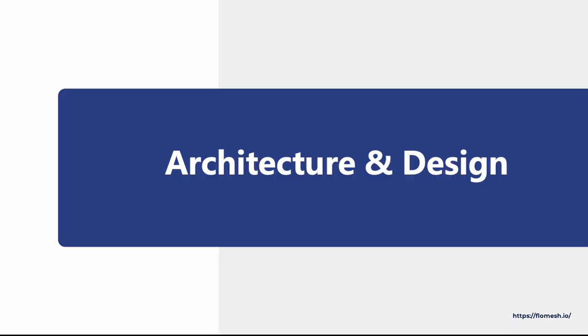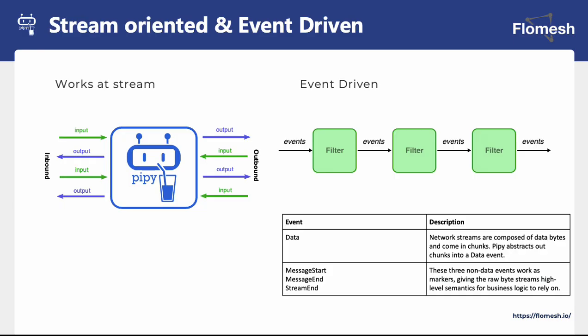Let's take a look at the architecture and design. Pype is stream-oriented where it takes streams in, processes them, and outputs the streams. Pype is event-driven in the sense that Pype streams are made of events instead of bytes. There are four types of events in Pype: the data event, and three non-data events also known as marker events. A stream coming from the network is a series of data events, each holding a chunk of bytes received from the TCP communication. Events are processed by a chain of filters, where you can think of filters like a tiny Unix process that reads from its input, writes to its output, with the output of one filter connected to the input of the next.